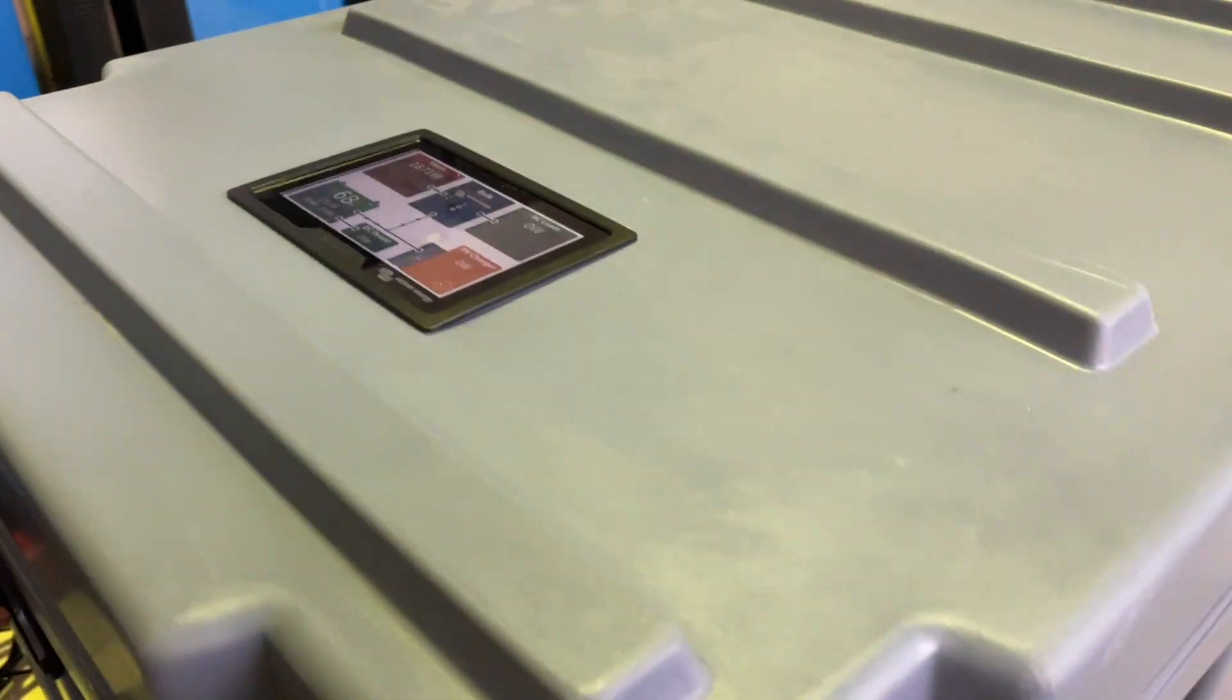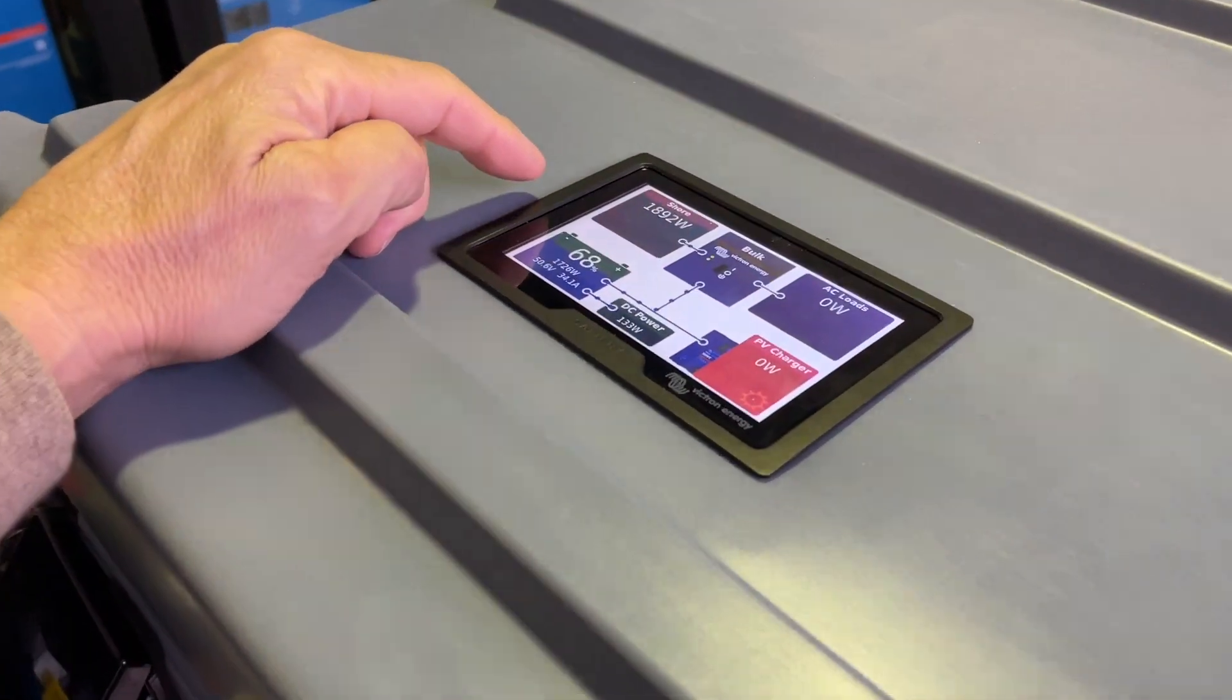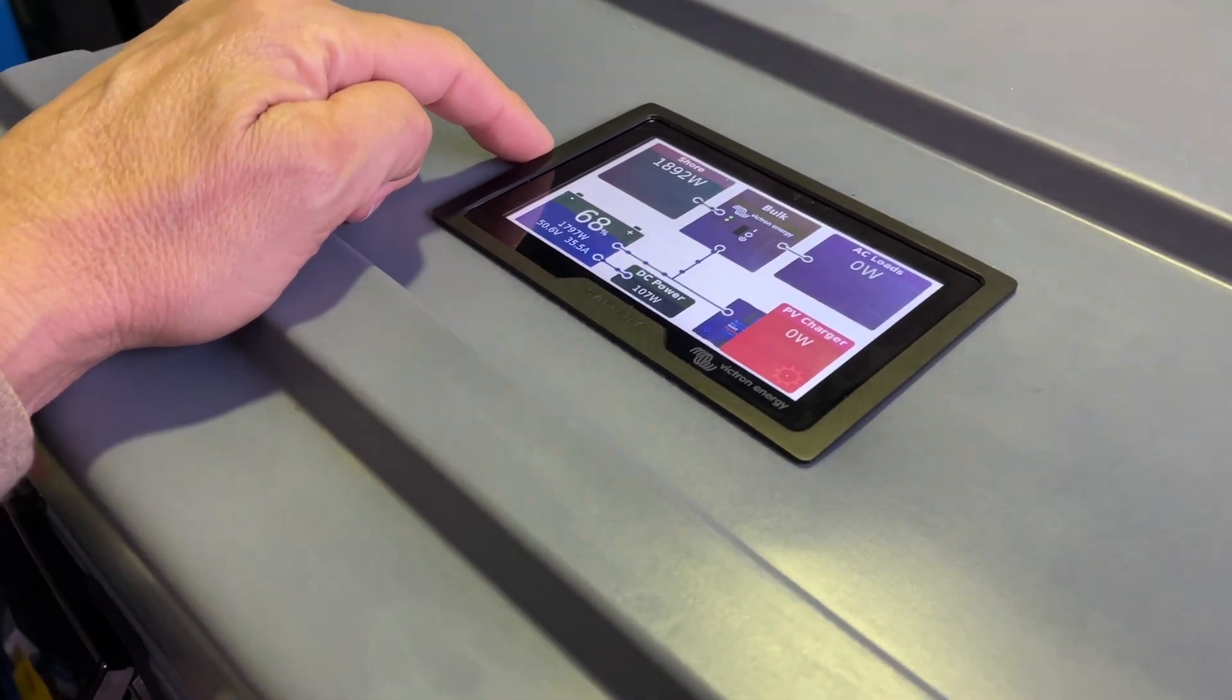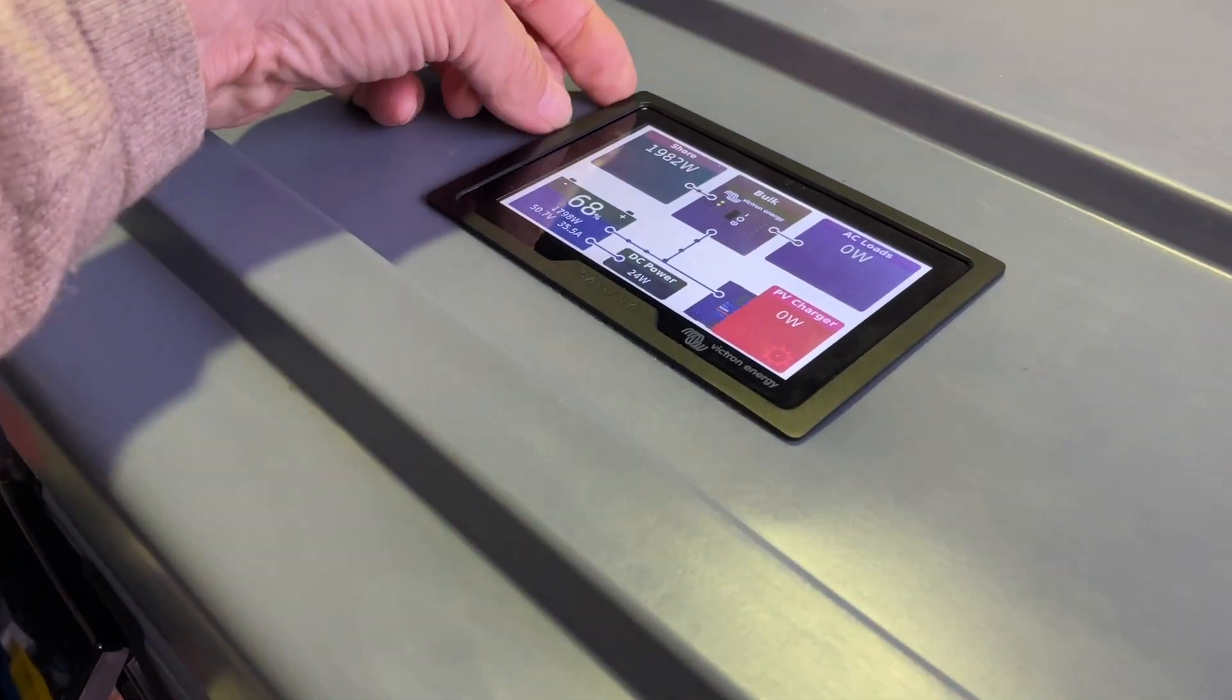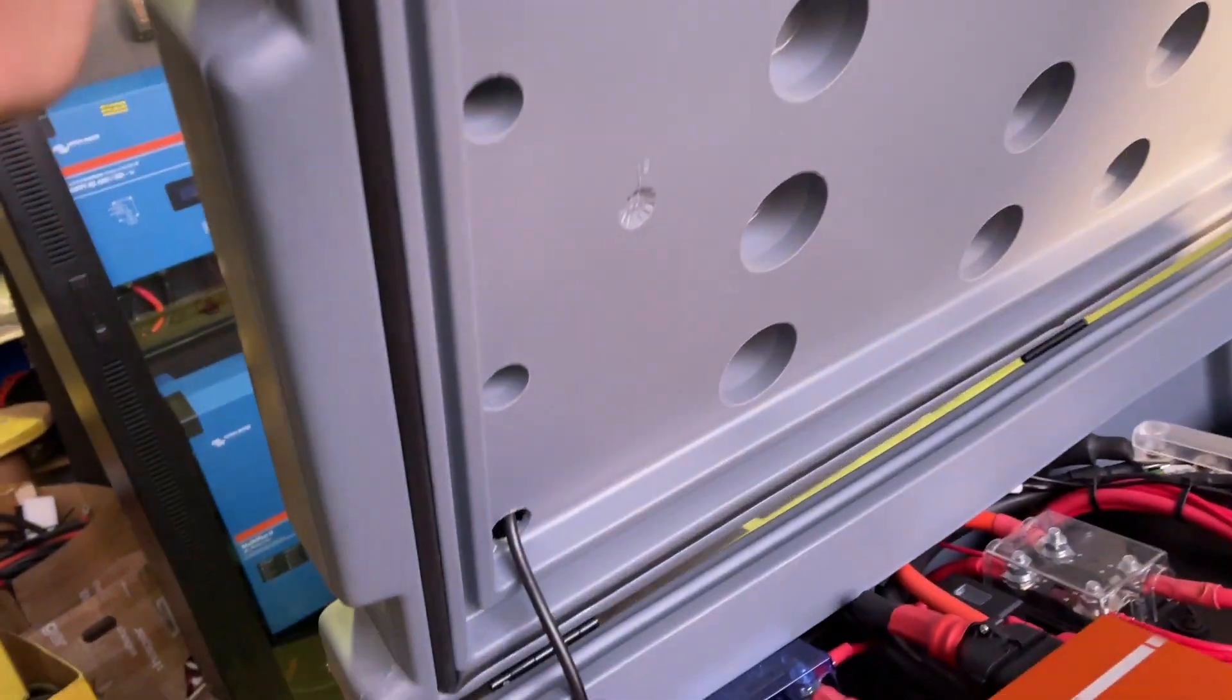Phil wants to be able to look in through the RSI glass window on the side and see what his batteries are doing. Tom's done that—he's embedded the screen in the top of this and very neatly concealed the cable coming up underneath there.